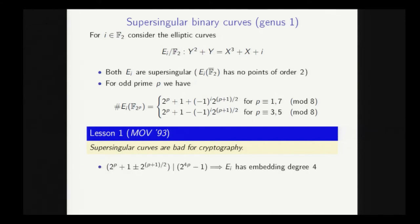And as a result, the first lesson for the crypto community regarding the use of these curves was that they are bad. And just to give an example, for this E0 and E1, they have embedding degree 4, and so you have an attack which is sub-exponential.